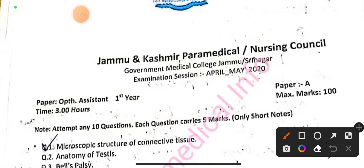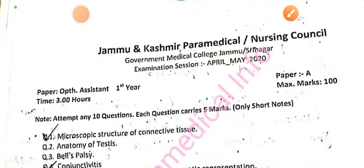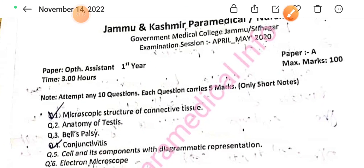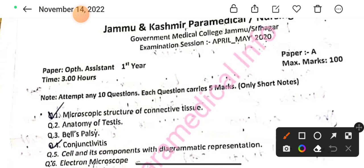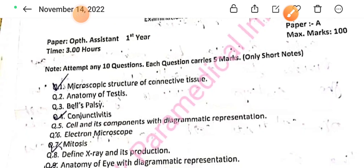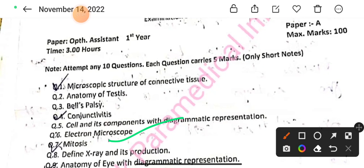Question number 1: Microscopic structure of connective tissue. Question number 2: Anatomy of testes. Question number 3: What is the Bell's palsy. Question number 4: Conjunctiva — write a short note. Question number 5: Cell and its components with diagrammatic representation. Question number 6: Electron microscope. Question number 7: What is mitosis.